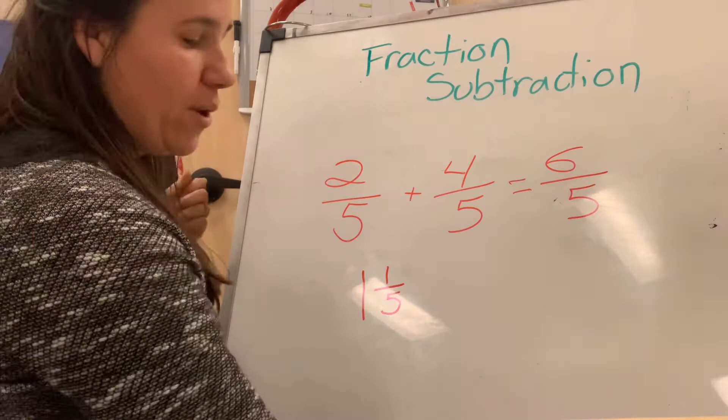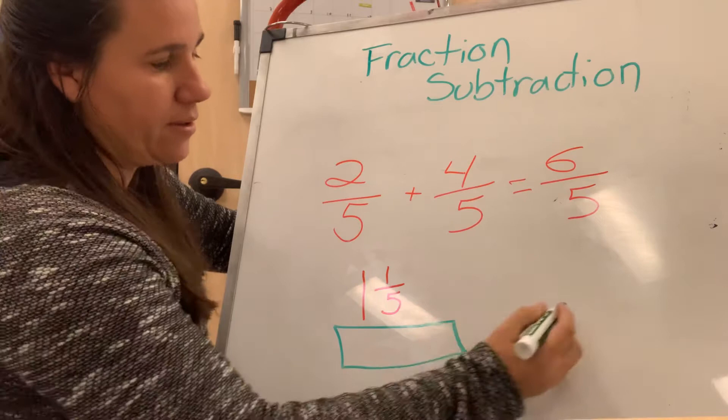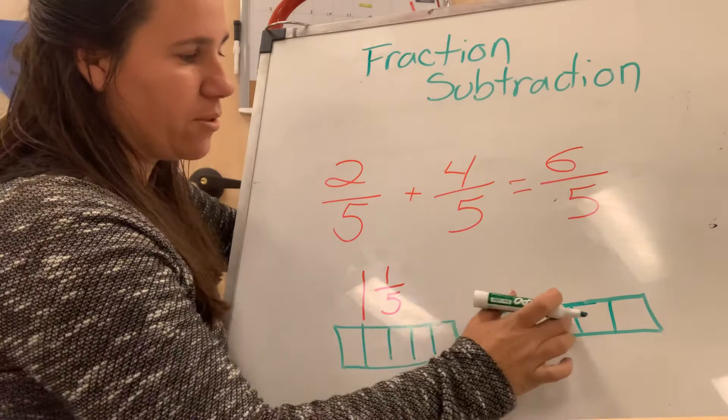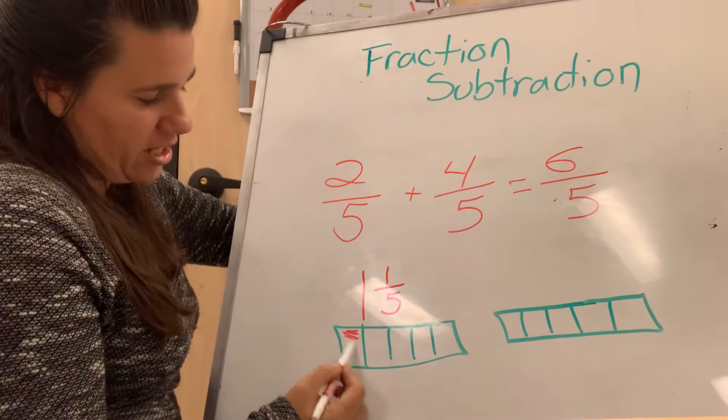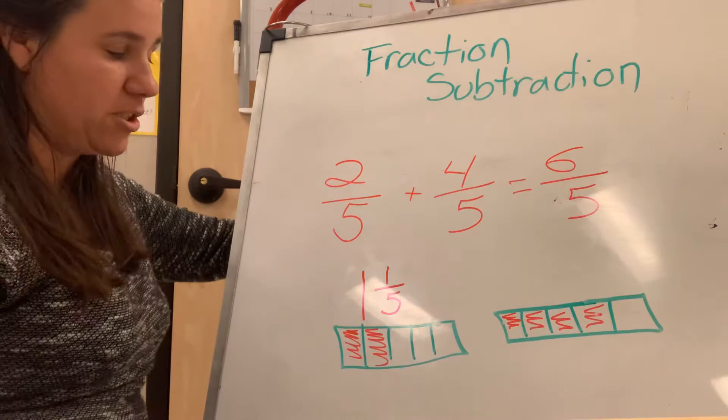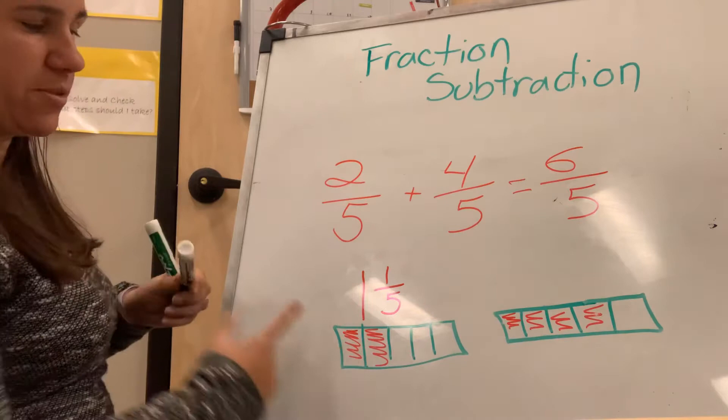And if I was not sure, I could check with models. I drew two circles divided into fifths. And this one is two-fifths. So I'd shade in two-fifths. And four-fifths would be one, two, three, four. Well, that would be six total pieces shaded.